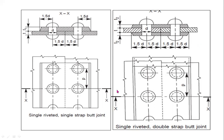Rivet type joints may fail in four ways: tearing of the plate at an edge, tearing of the plate across the row of rivets, shearing of the rivets, and crushing of the plates or rivets. In the next class, we will discuss about failures in riveted joints and the design of riveted joints.